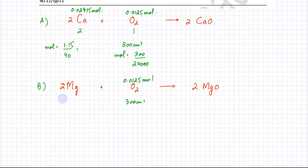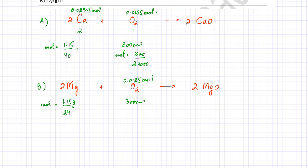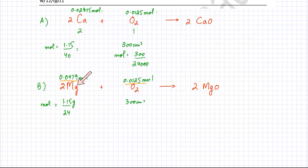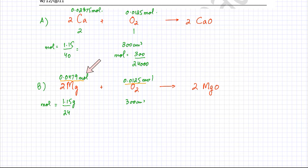We now find the moles of magnesium. The mass is the same 1.15 grams, divided by the molar mass of Mg which is 24, giving approximately 0.0479 moles of Mg. The equation requires a 1:2 ratio of oxygen to magnesium, but 0.0125 and 0.0479 do not satisfy that ratio. Option B, magnesium, is not the correct answer.